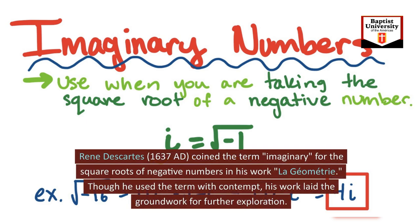René Descartes, 1637 AD, coined the term imaginary for the square roots of negative numbers in his work La Géométrie. Though he used the term with contempt, his work laid the groundwork for further exploration.